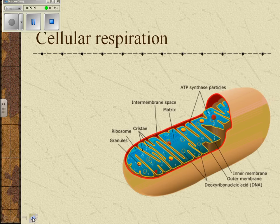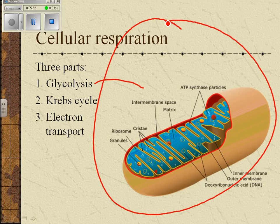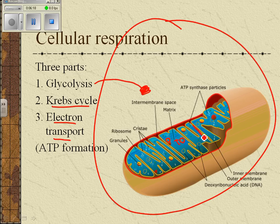Cellular respiration happens in the mitochondrion, and here's a picture of a mitochondrion. There are three stages to cellular respiration: glycolysis, which actually happens outside the mitochondrion in the cell; the Krebs cycle; and electron transport, also known as ATP formation, which happens inside the mitochondria. The Krebs cycle is shown here with little circles, and along the inner membrane of the mitochondrion is where electron transport and ATP formation happen.